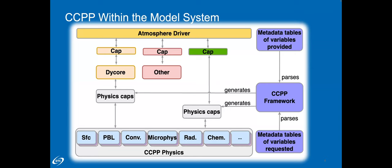One of the keys of the entire CCPP is that each physics scheme has an associated file containing metadata. It contains information about what variables a physics scheme needs to perform its function and its output — essentially a complete description of its data interface in a way the CCPP framework can understand. Likewise, on the host model side, there must be similar metadata in a special format describing what variables a host model can provide to the physics and how and where that data exists. At model build time, the CCPP framework scripts are invoked to read this metadata from both sides to construct or auto-generate a software cap that acts like a custom-made physics driver for a given suite.